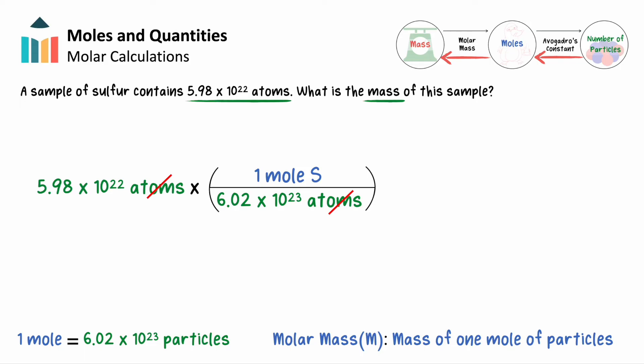For sulfur, 1 mole weighs 32.07 grams. We'll therefore multiply our number of moles of sulfur by the element's molar mass to find the total mass of sulfur in the sample.